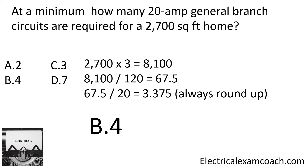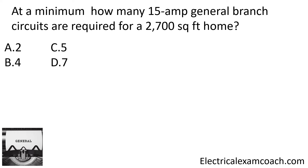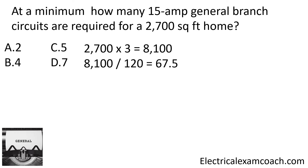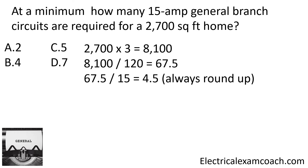These are not to be confused with the five required ones. This is for someone who wanted to wire their home for general lighting and receptacles with 12-gauge wire — they'd be allowed to put them on 20 amp circuits, and this is how we would calculate it. Now let's do a 15 amp version. At a minimum, how many 15 amp general branch circuits are required for a 2,700 square foot home? We take 2,700 multiplied by 3 VAs per square foot, divide by 120 volts, then divide by 15 amps. It's going to equal 4.5, and we're always going to round up to five.